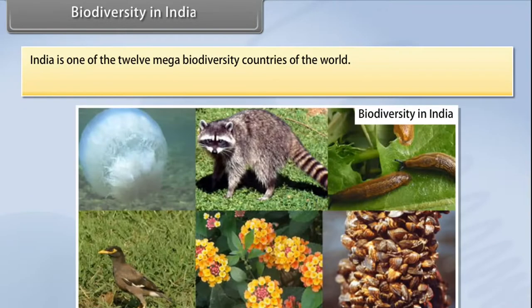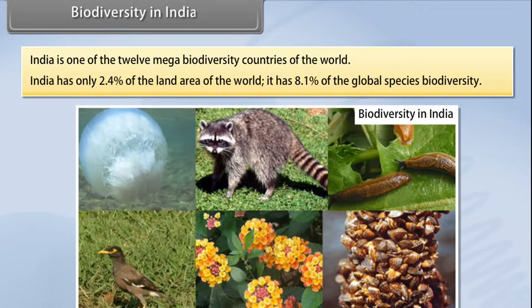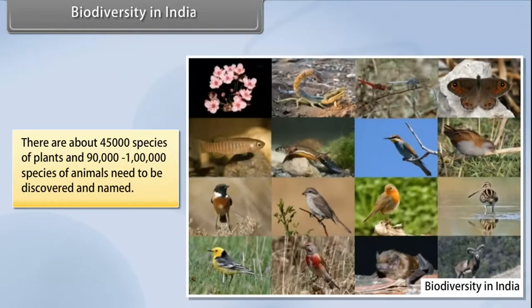India is one of the 12 mega biodiversity countries of the world. India has only 2.4% of the land area of the world, yet it has 8.1% of the global species biodiversity. There are about 45,000 species of plants and 90,000 to 1 lakh species of animals yet to be discovered and named.